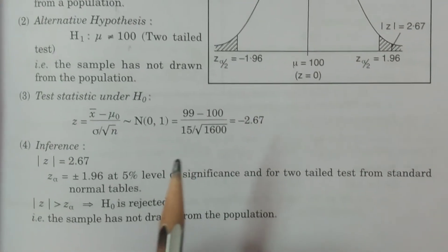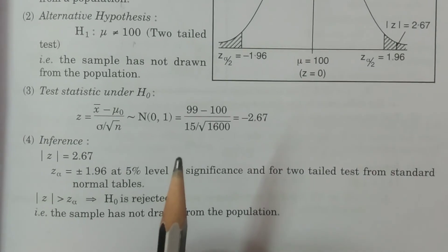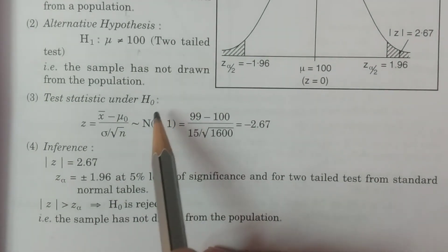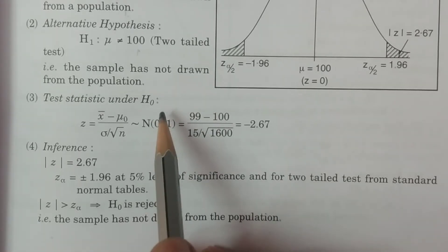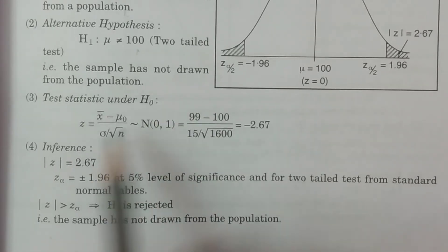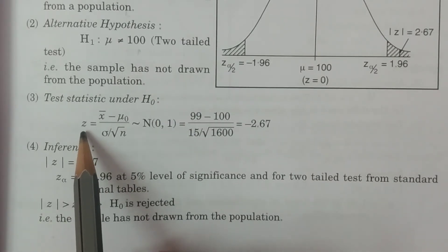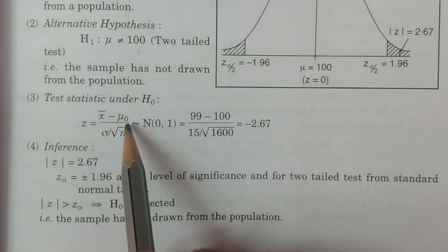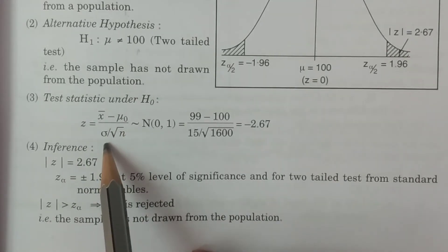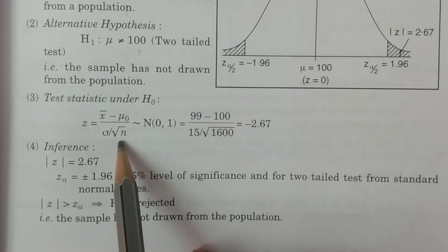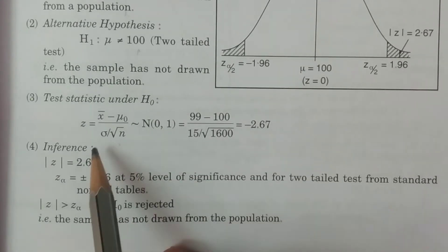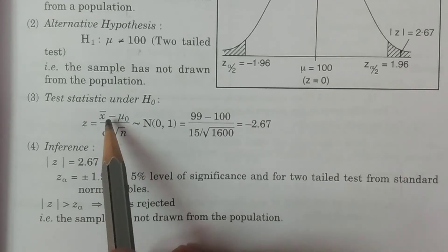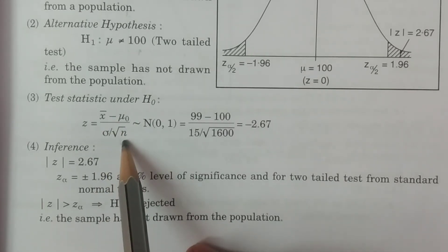Third point — test statistic under H naught. Since sigma is known, the formula is: Z equals X bar minus mu naught, divided by sigma by root n, which follows N(0,1).